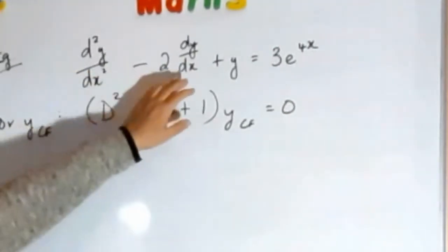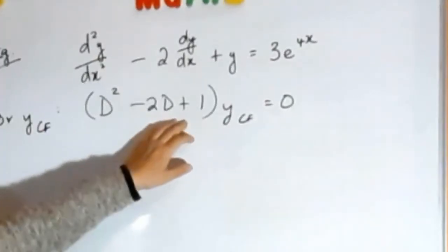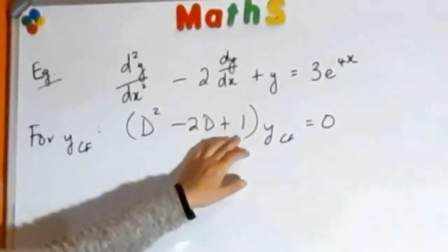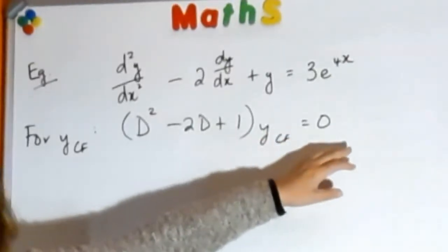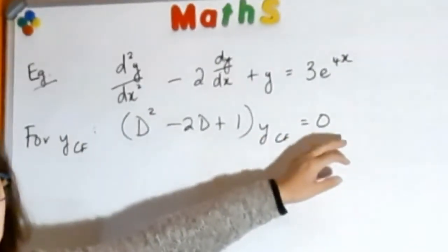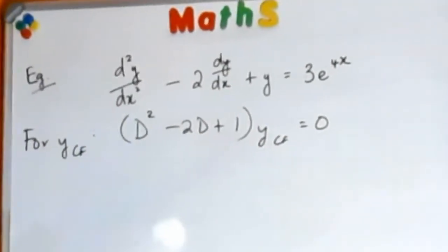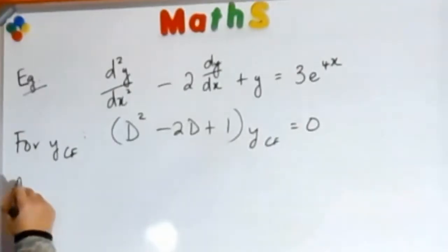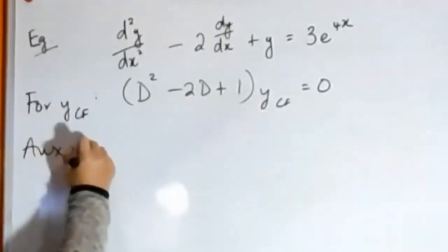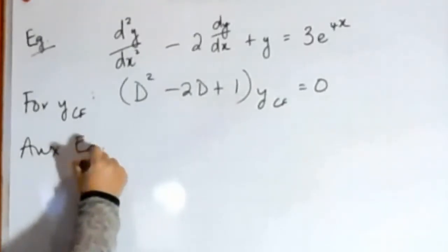We can write the differential equation using D operators in this form in the bracket, and we know that that times your complementary function is going to give you zero, and we learned that from the homogeneous solution for the homogeneous differential equation. So if we look at the auxiliary equation we'll be able to find the form of the complementary function.